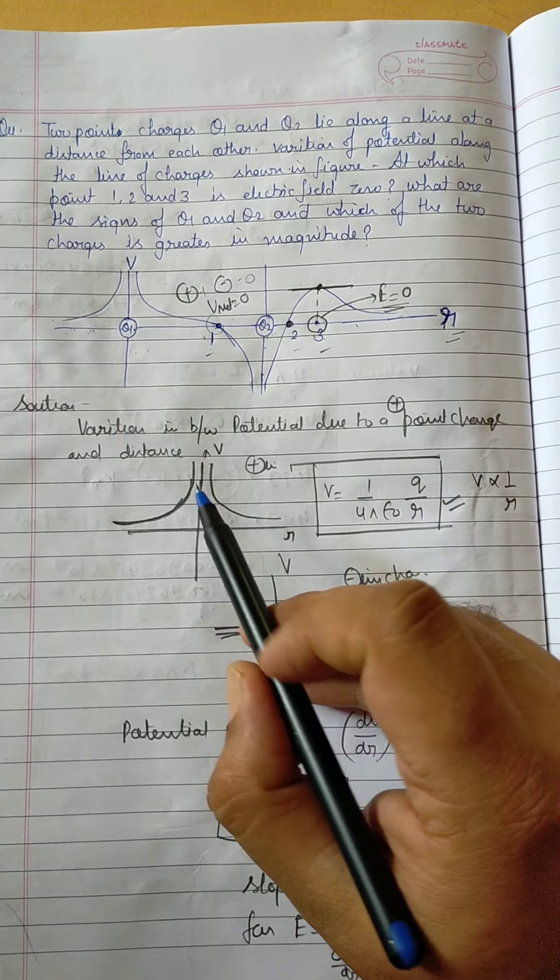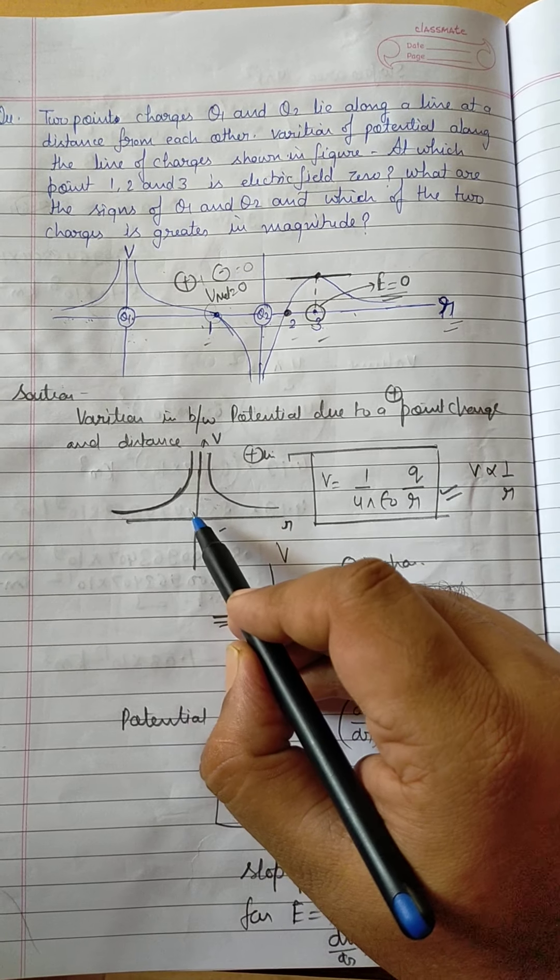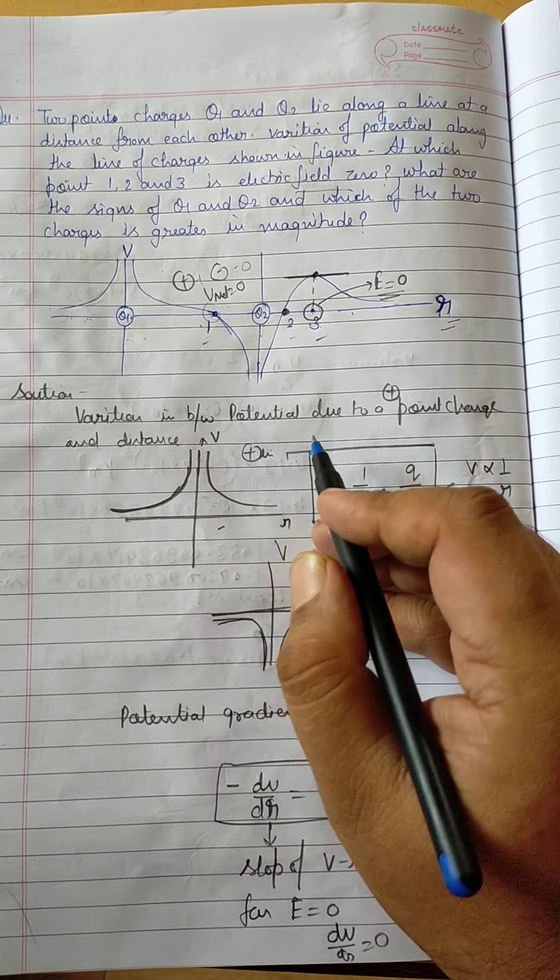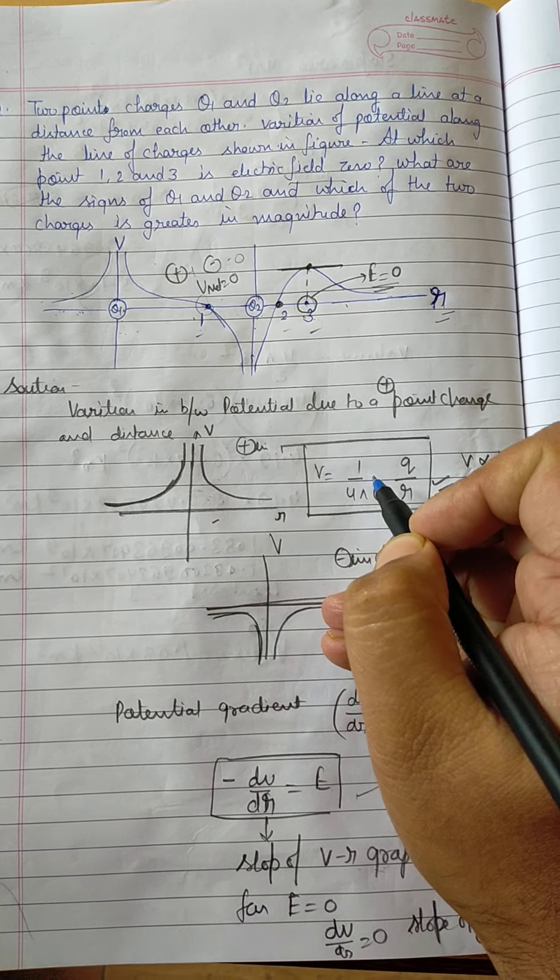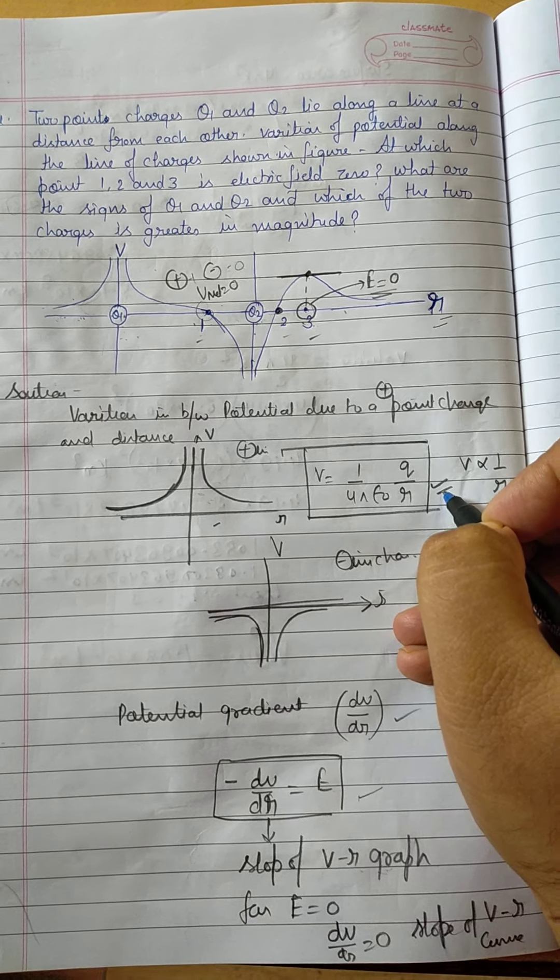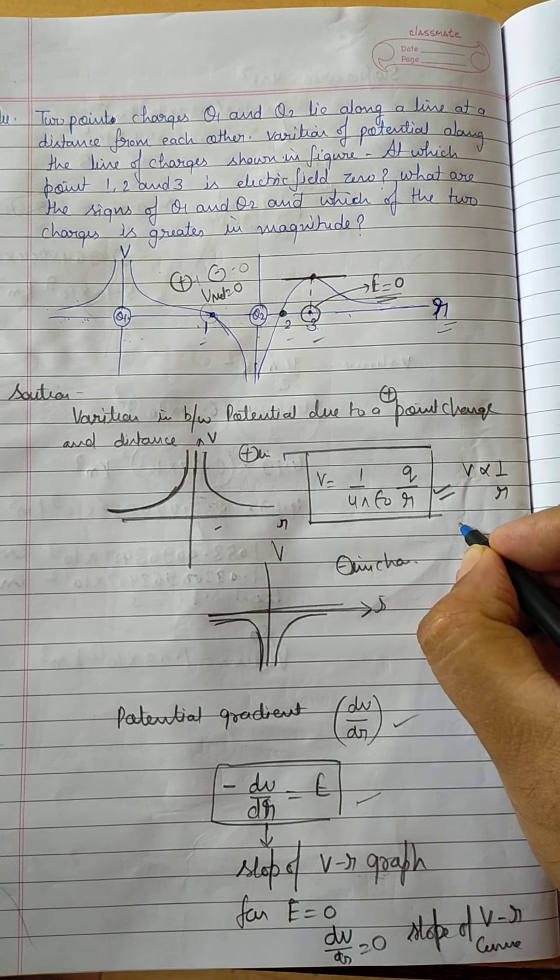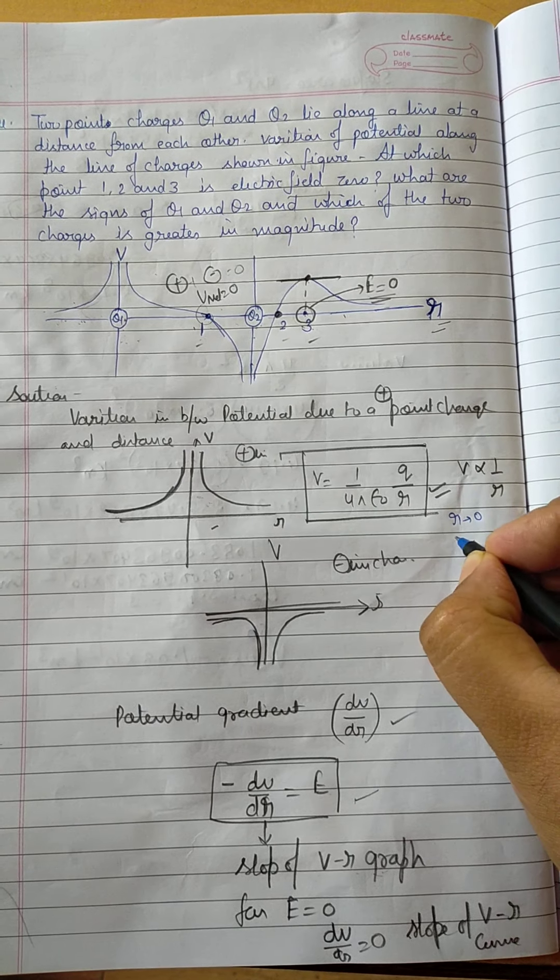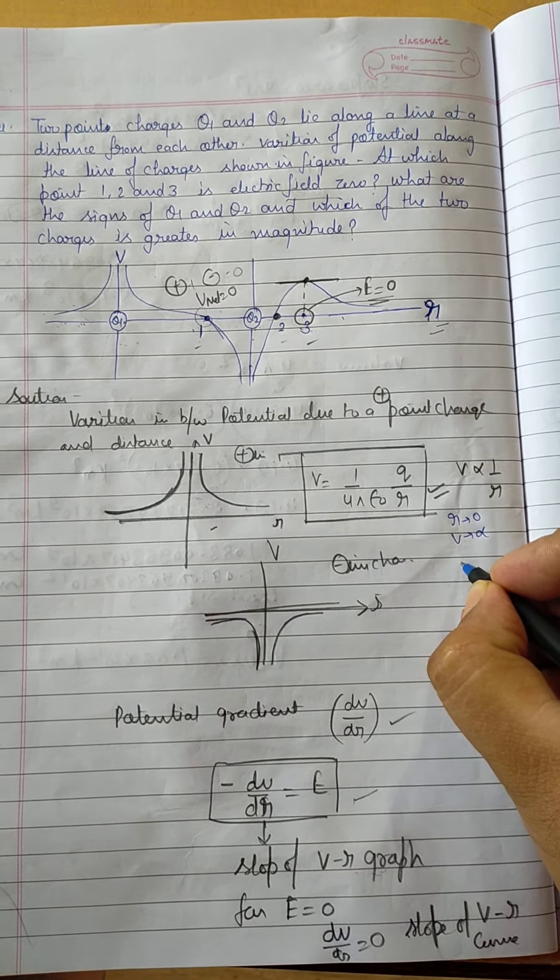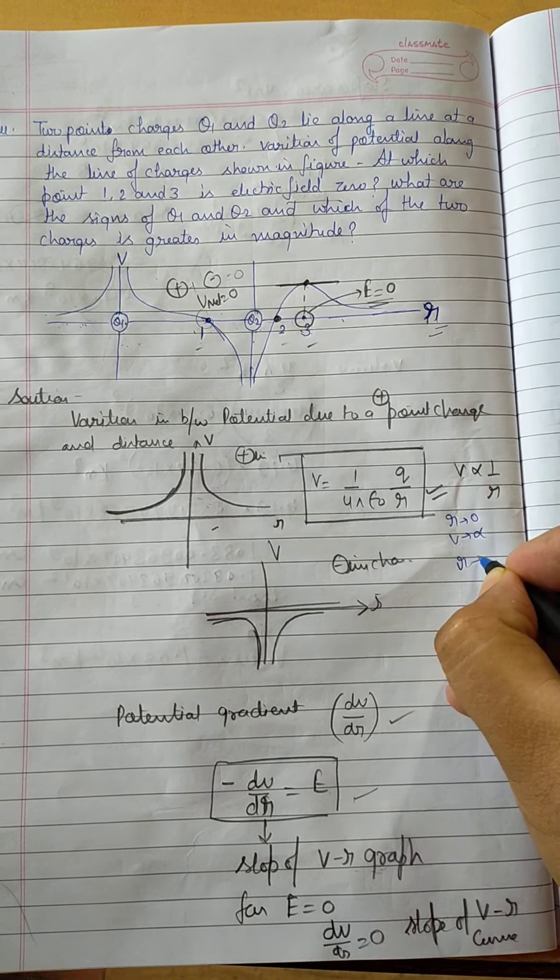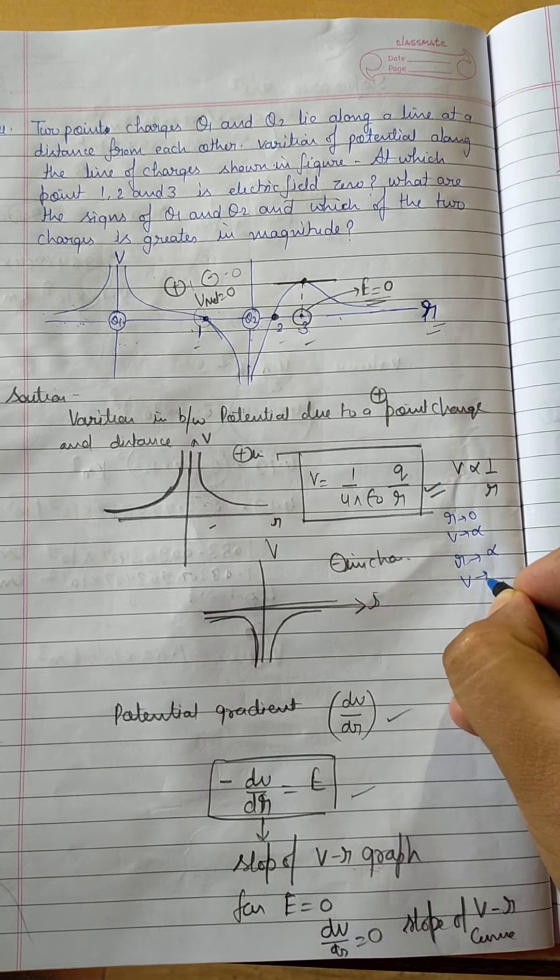तो first of all, आज हम लोग जब इसे solve करेंगे तो हम लोग एक basic fact पे आएंगे। Electric potential due to a positive point charge, formula is V = kq/r, and the graph is this simple—because when r is 0 then V is infinity, and when r is infinity then V is 0.